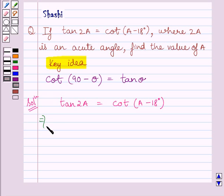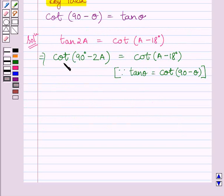So we can write, this implies cot 90 degrees minus 2A is equal to cot A minus 18 degrees. Now, cot 90 degrees minus 2A is equal to cot A minus 18 degrees only when the value of these two angles is equal.